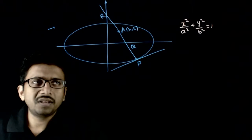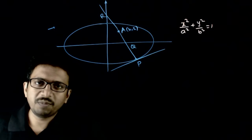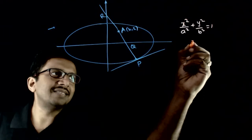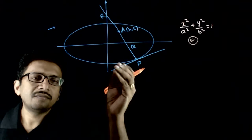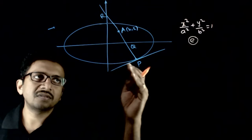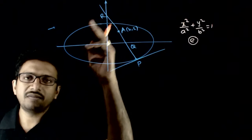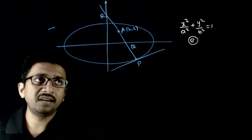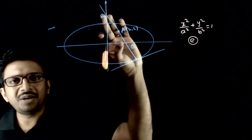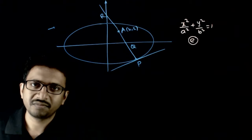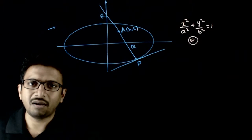In this question, given that you have an ellipse x²/a² + y²/b² = 1, whose eccentricity is e. From a variable point on this ellipse, you have drawn a normal which meets the x-axis at Q and the y-axis at R. You are asked to find the locus of the midpoint of QR.